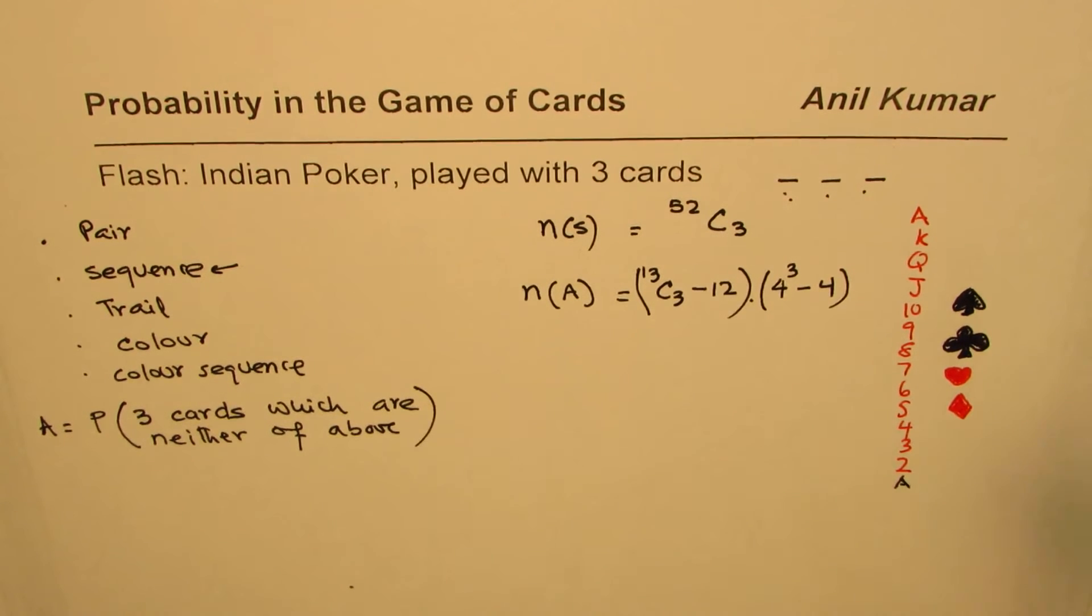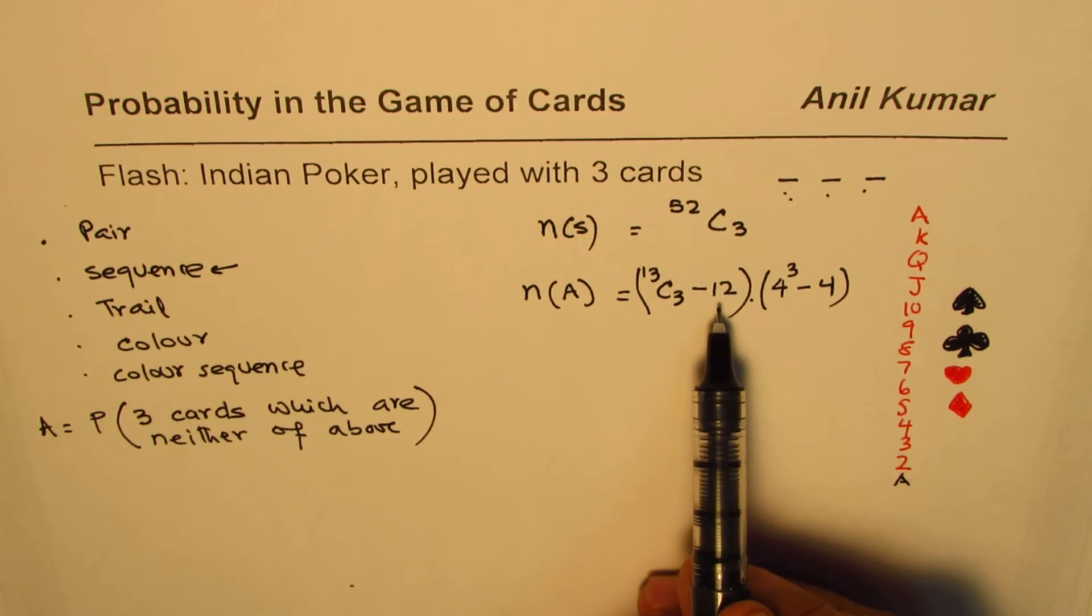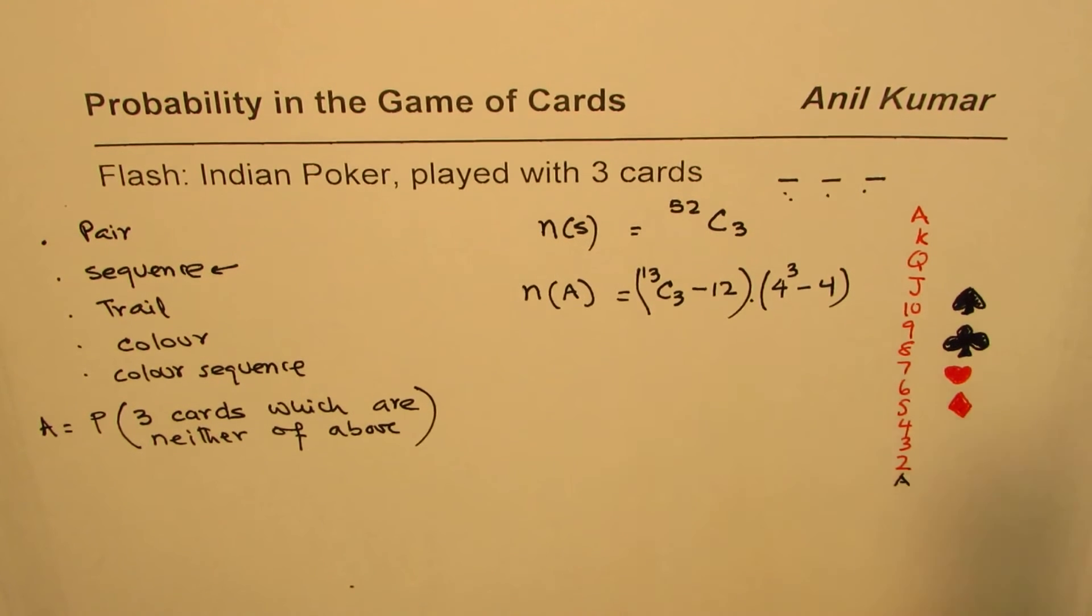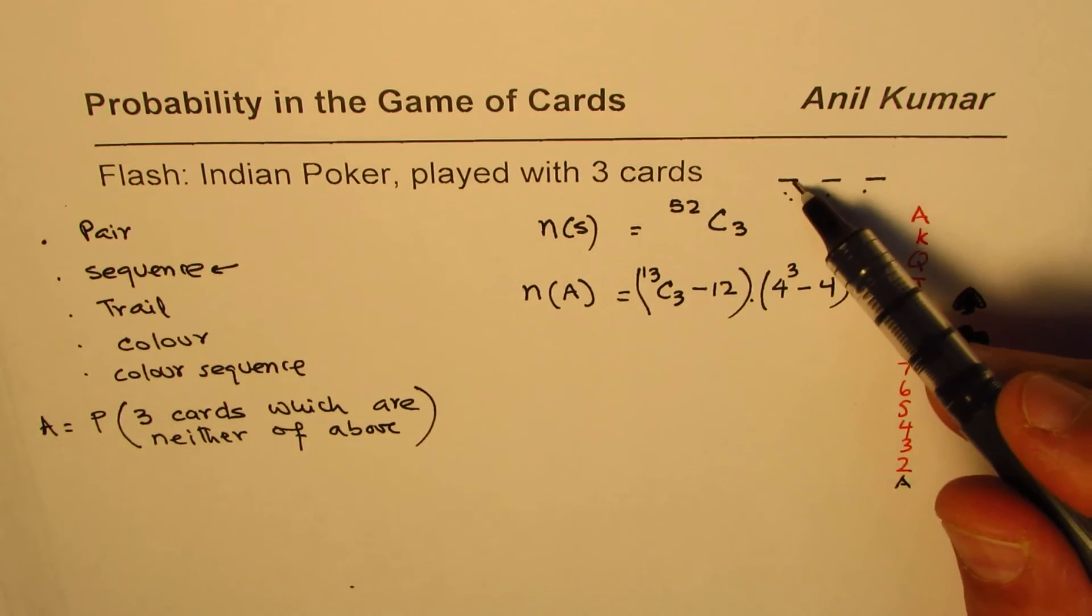Therefore, all these options are excluded. Do you get an idea? I'd like you to go through this once again. So what we are doing here is we are first selecting a value, and amongst the values we have taken away those which could form a sequence, a straight, by taking away those 12 numbers. And then we selected the color, and amongst those colors we have taken away the option that all are of the same color, those are four in number.